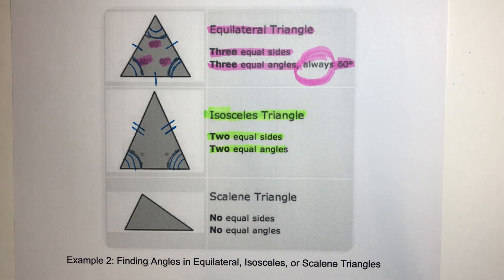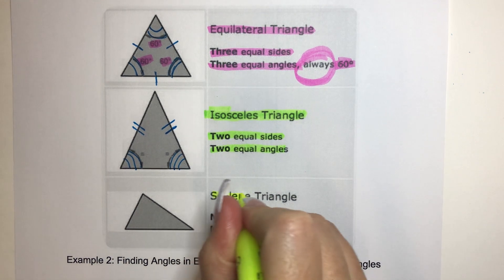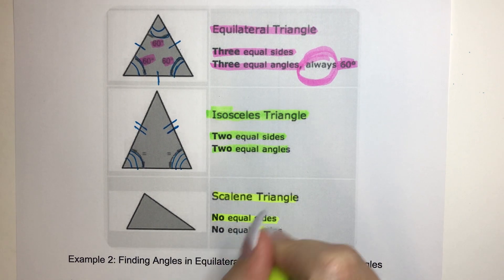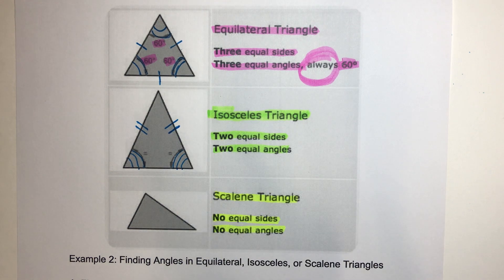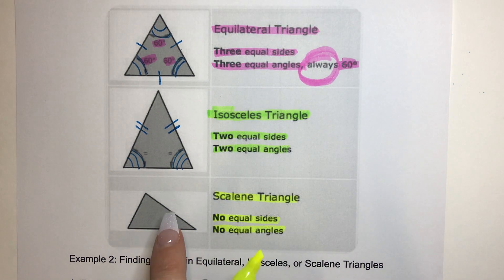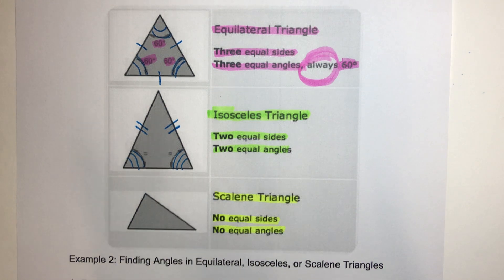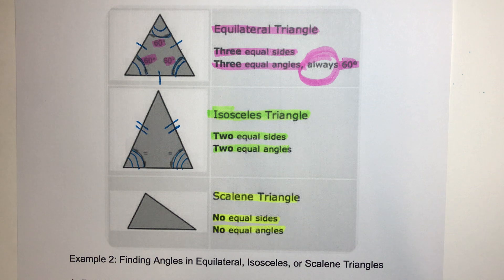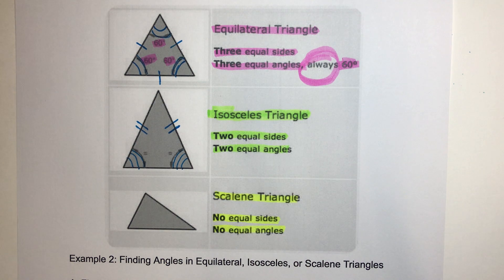The last triangle we're going to talk about is the scalene triangle. Scalene triangles have no equal sides and no equal angle measures. So I can't put any hash marks on the sides and I can't put any arc marks on the angles because there's nothing that is the same. Everything is unique and different — it's a very unique triangle, the scalene.